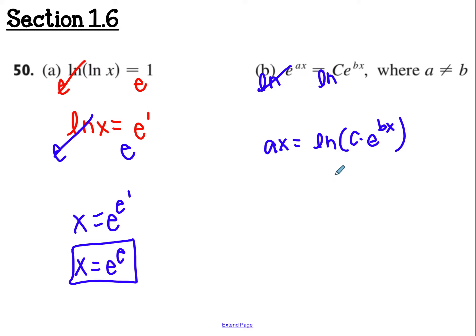Now here is where my properties of logs and natural logs come in handy. I'm multiplying so I can separate it with addition. So I have ln of c plus ln of e to the bx. Well that's nice. My ln and my e right here will cancel. So I have ax equals ln of c plus bx.